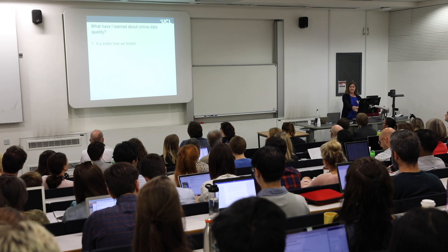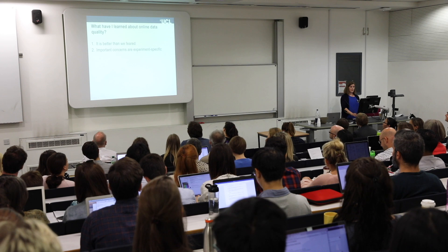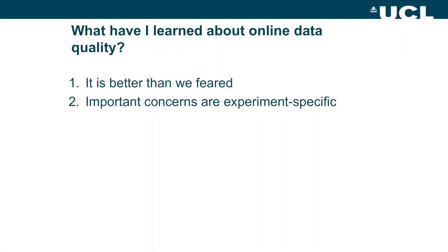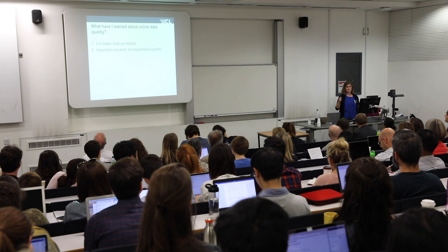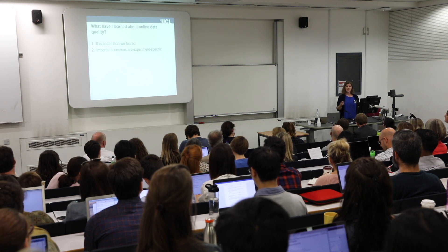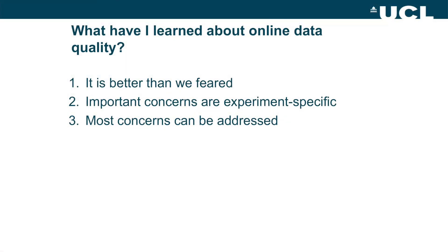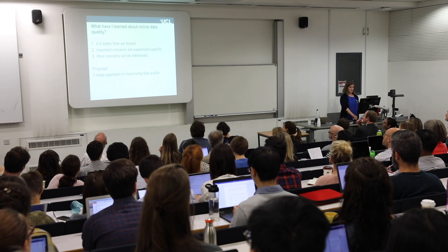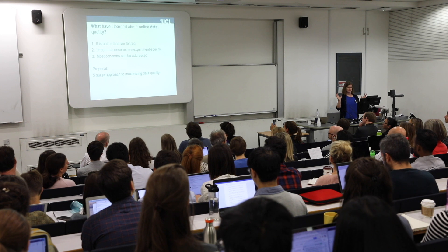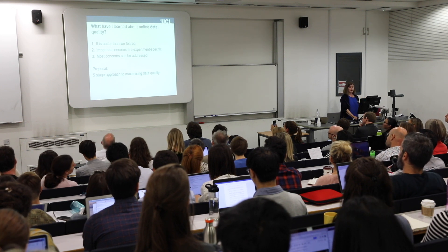But wider variance is about participant diversity, not data quality. The other thing I've learned is that the things I really worry about are specific to each particular experiment — there are no grand solutions, no tick-list that guarantees your experiment will work. It's experimental design 101: think about your particular experiment and the ways it can go wrong. In most cases there's a fix, and if you can't find one, somebody else probably has. So I'm going to talk you through a five-stage process I would recommend for any experiment you're going to run online.